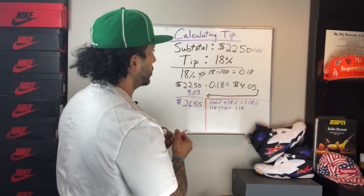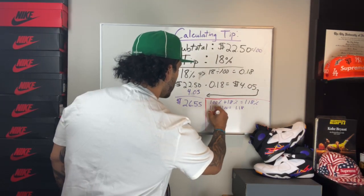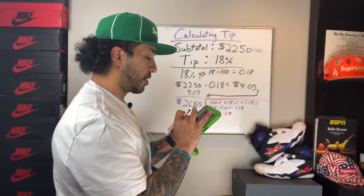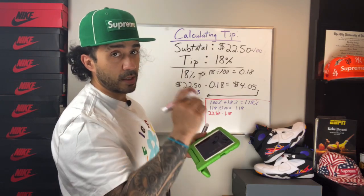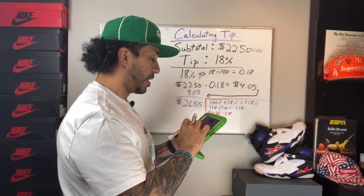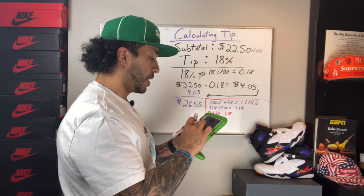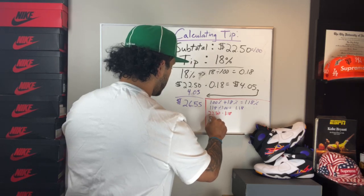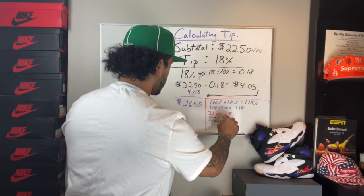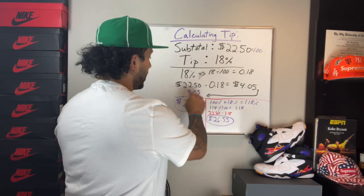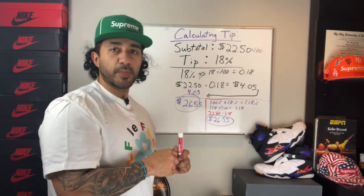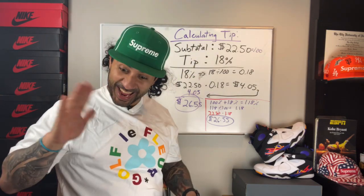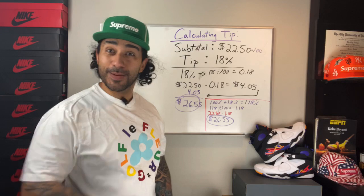We're going to multiply one point one eight by twenty-two fifty. Remember, a calculator is not cheating. Twenty-two fifty times one point one eight equals twenty-six dollars and fifty-five cents — same answer both times. That's how you calculate tip on a subtotal.